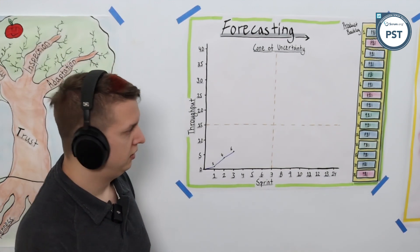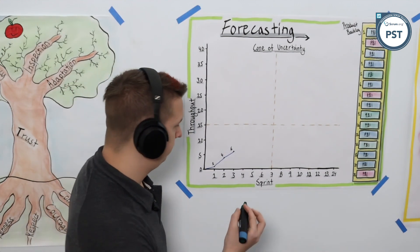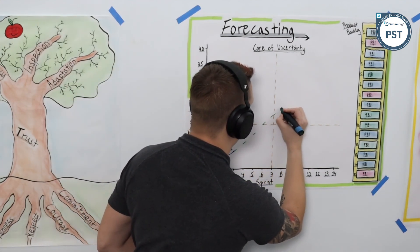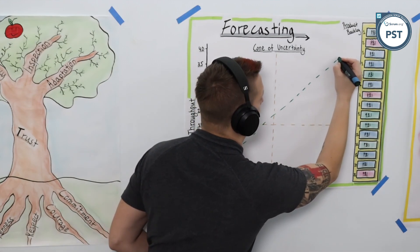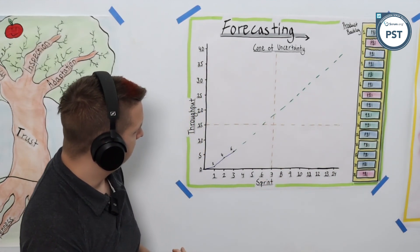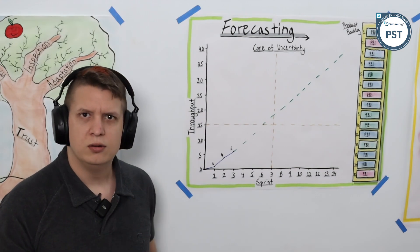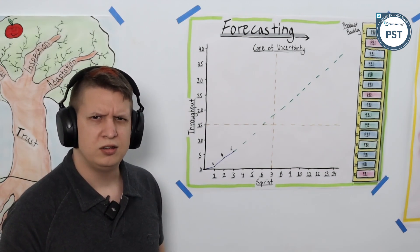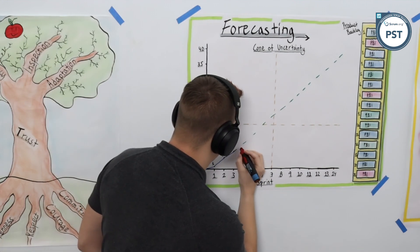Let's start with the best case - we like to be optimistic after all - and let's draw out that line into the future. Now of course we want to look at the worst case scenario as well, and let's draw that line out into the future.